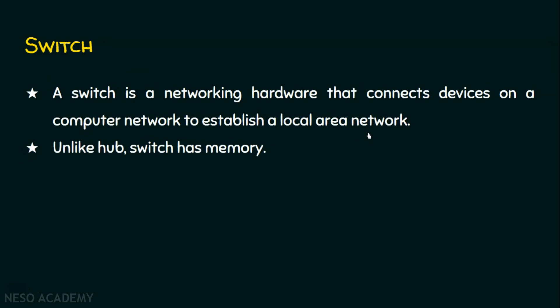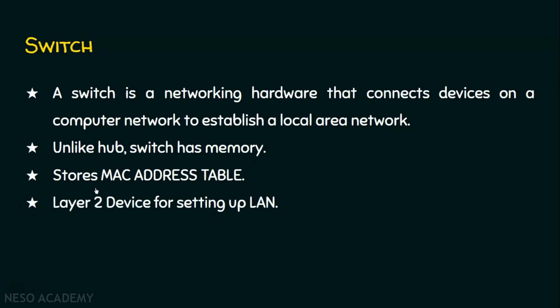The main difference between a hub and a switch is that a hub has no memory whereas a switch has memory. The switch is going to store the MAC address in its memory — it maintains a MAC address table. Another important difference is that a hub is a layer one device whereas a switch is a layer two device, both used for setting up a local area network. We will see the difference between hub and switch elaborately shortly.